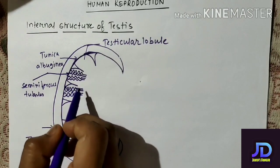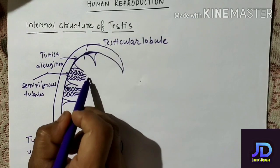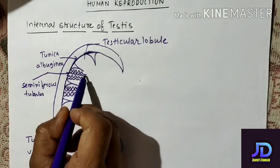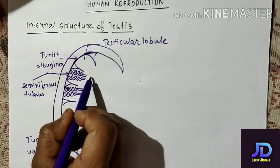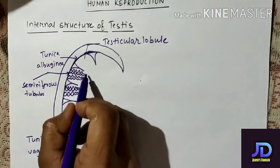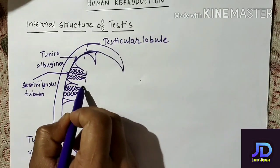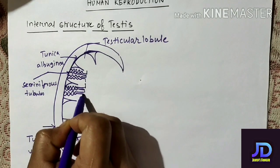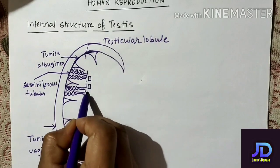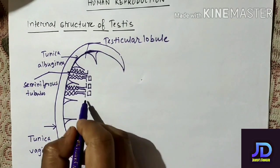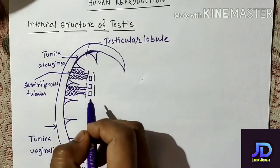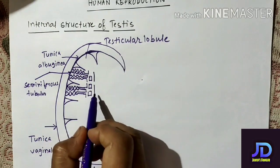You might have noticed one thing: as soon as the seminiferous tubules leave the compartment, they become a straight line. This straight part of the seminiferous tubules will join with each other and it will give rise to a network, and this network is known as rete testis.